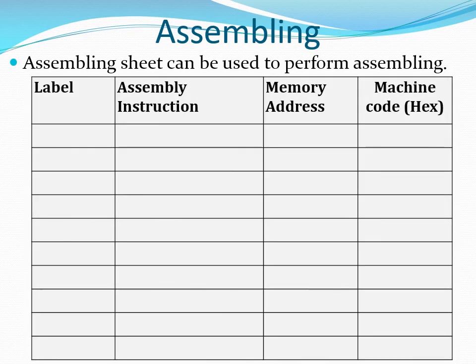An assembling sheet can be very handy when manually assembling programs. The sheet has four columns: the first column is for labels, the second column is where you put your instructions, the third column is the memory address of the instruction when it goes into memory, and the last column is for the machine code of the instruction.